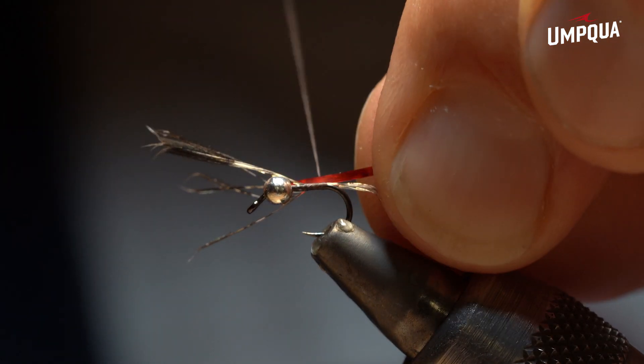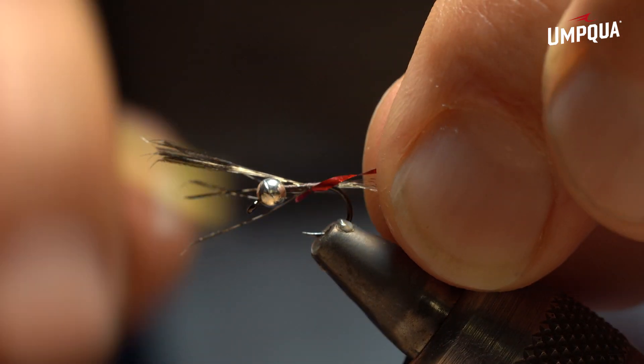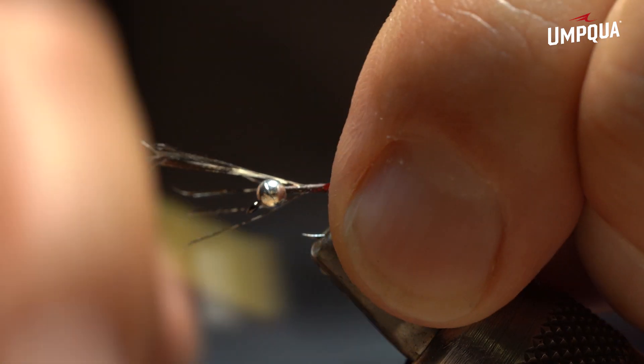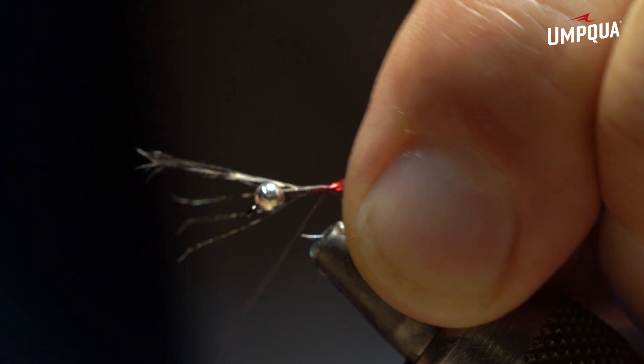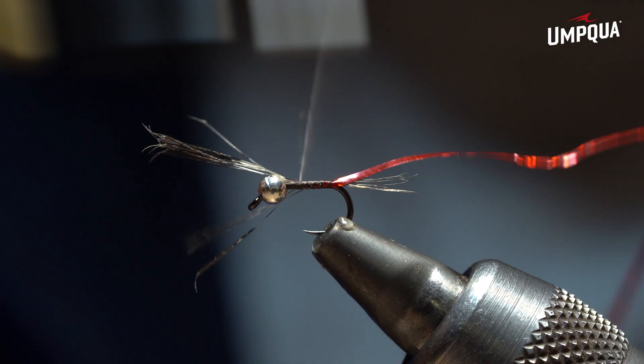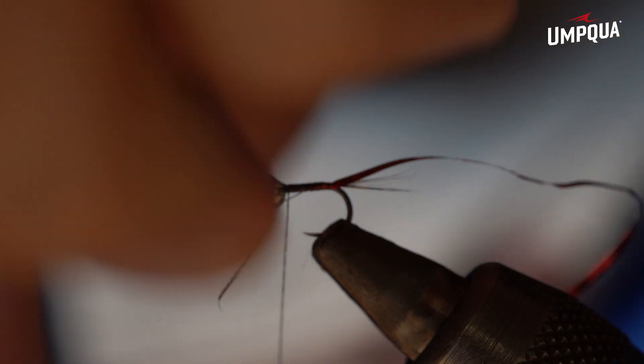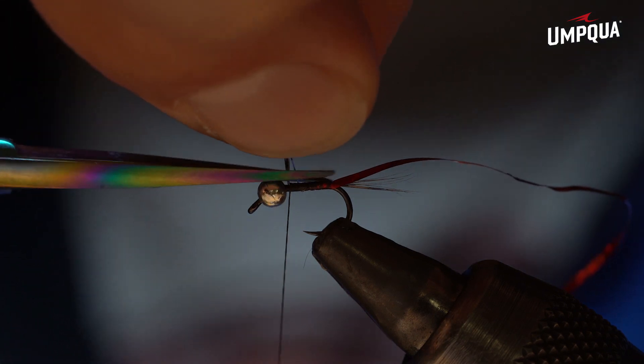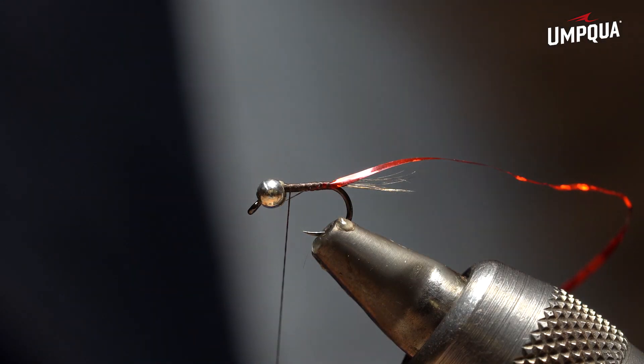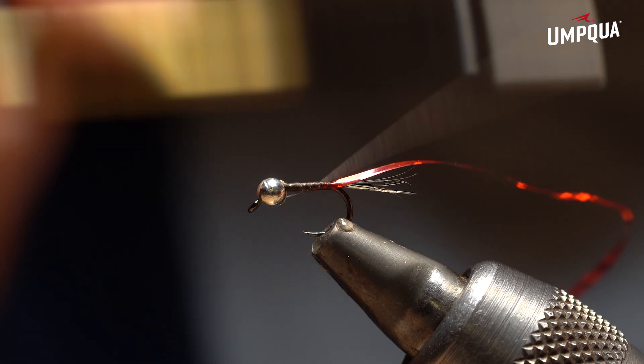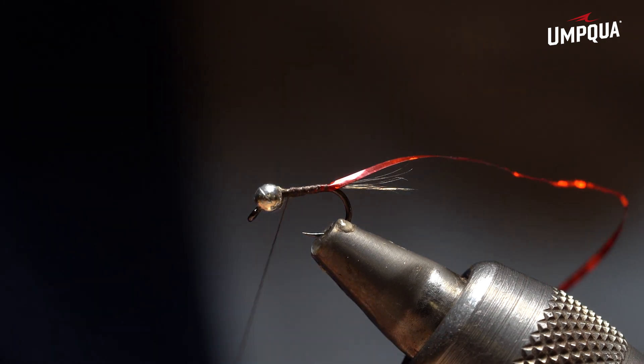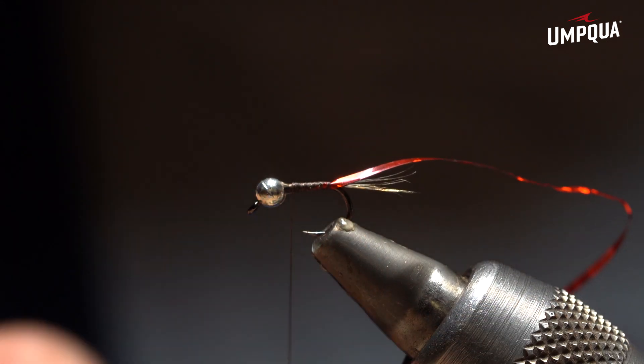One of the things that I'm going to do opposite of most of the flies that we tie - I'm going to tie the hot spot on the back. Being a fly that will have some volume with some dubbing, I like to have the hot spot on the back of the fly.